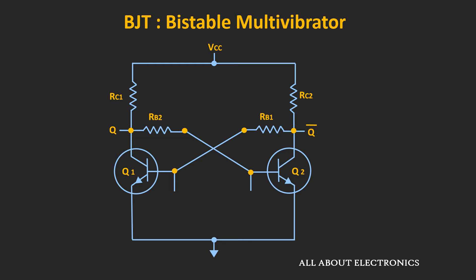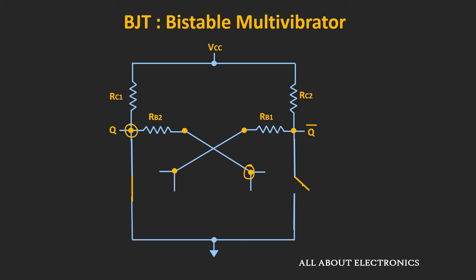We can say that transistor Q1 will act as a short circuit. Because of that, the voltage at the collector of Q1 will be approximately equal to zero. The same voltage will also appear at the base of transistor Q2, so Q2 will operate in the cut-off region and act as an open circuit. Therefore, the voltage at the collector of Q2 will be approximately equal to Vcc. That means, initially after power-up, transistor Q1 will be on and Q2 will be off. In this condition, output Q will be low while output Q-bar will be high.